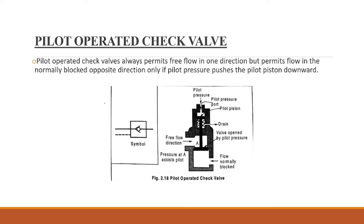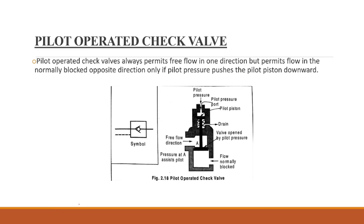The pilot-operated check valve permits flow in one direction, but normally blocks flow in the opposite direction. However, when an external pilot pressure pushes the piston downward, the piston allows flow in the opposite direction as well. The flow is allowed in the free-flow direction normally, and the pilot pressure enables reverse flow.